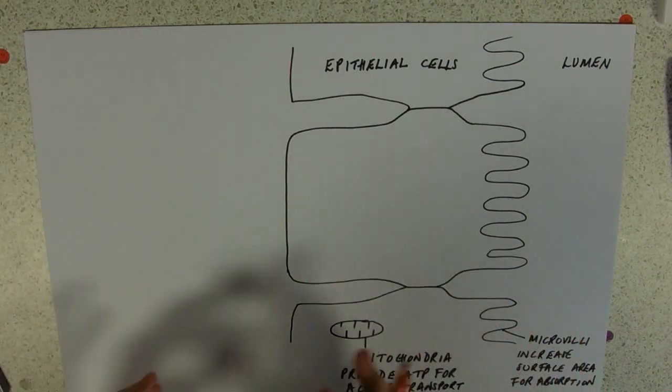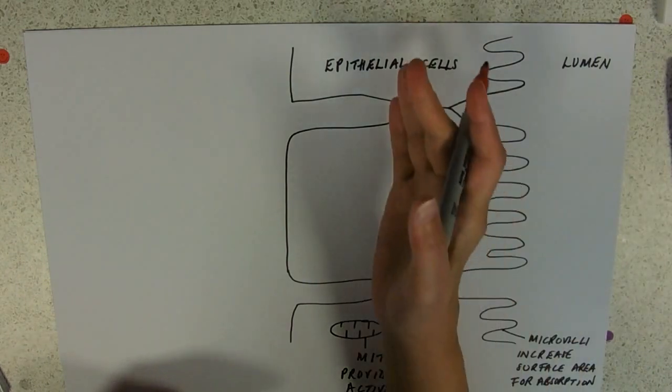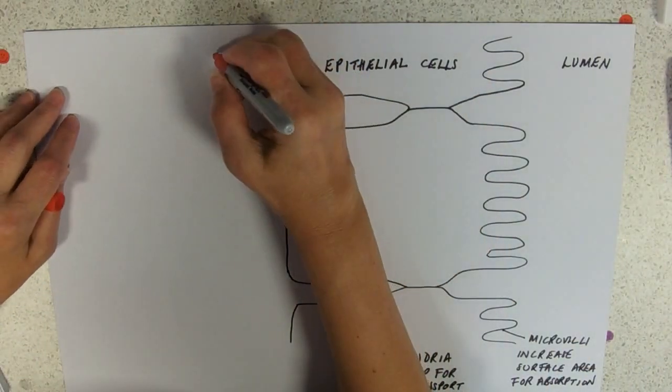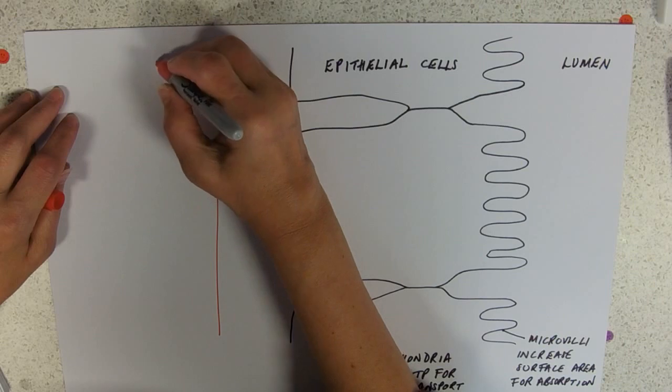So, remember our sort of overall structure of the villus. We've got the lumen, we've got the epithelial cells, and underneath that we then have our capillaries.